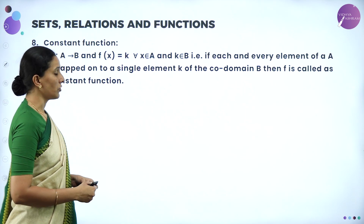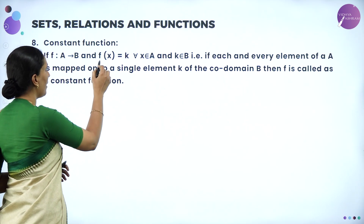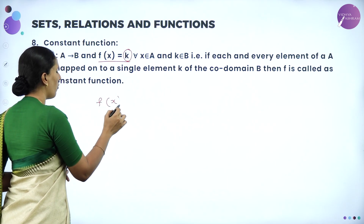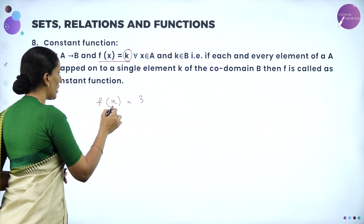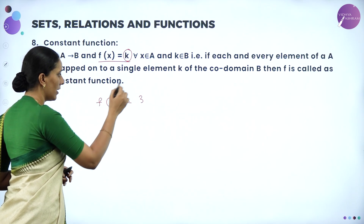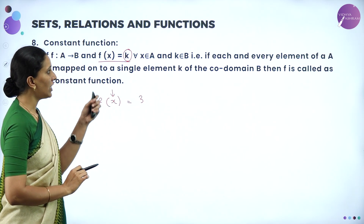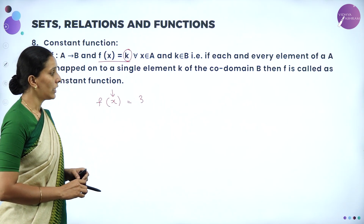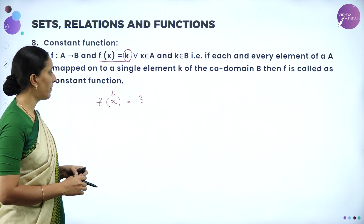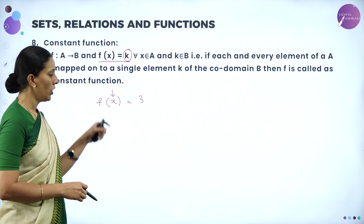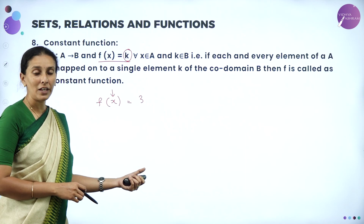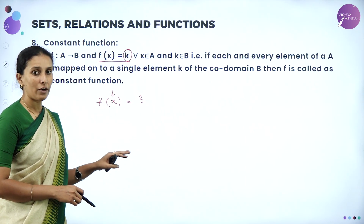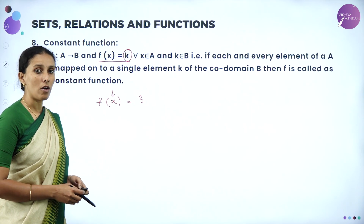Constant function is defined such that f(x) = k for some constant k. For example, f(x) = 3 means whatever value you take for x, the answer is always 3. If each and every element of A is mapped to a single element k in the co-domain B, then f is called the constant function. You change the value of x but the function value never changes — it remains constant.